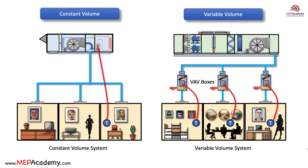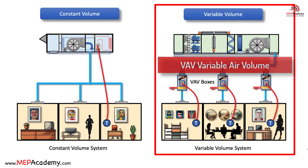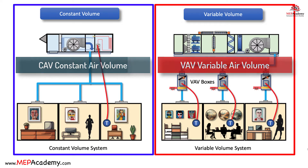Selecting the appropriate HVAC — heating, ventilation, and air conditioning — system for a building is a critical decision that can impact energy efficiency, occupant comfort, and operating cost. Two common options are variable air volume (VAV) systems and constant volume systems. In this video, we'll help you understand when it's best to use a VAV system or a constant volume system, depending on your specific requirements and goals.